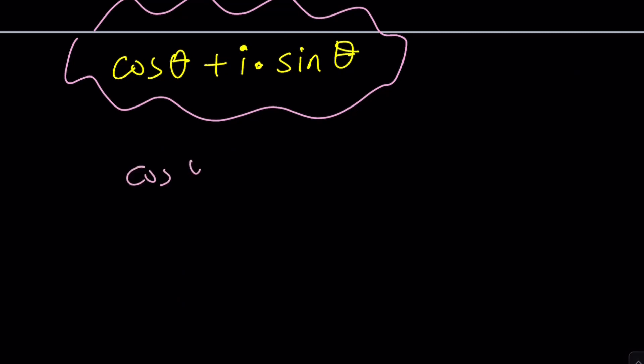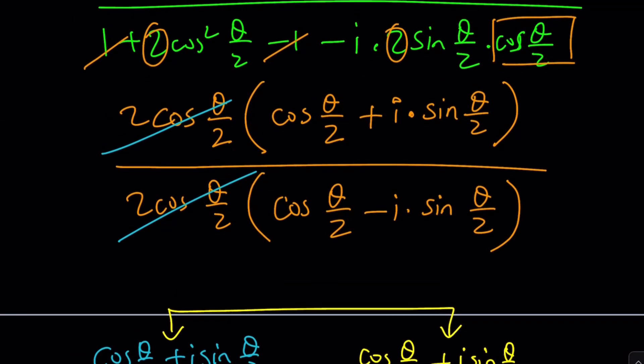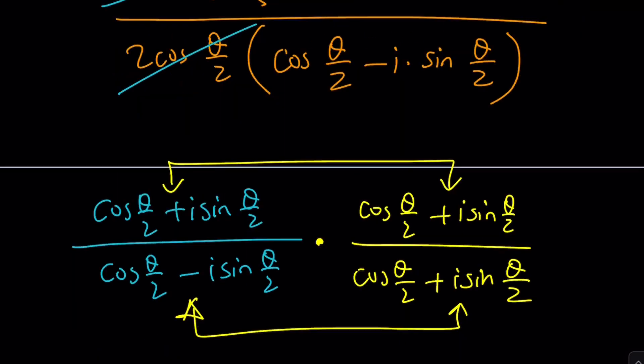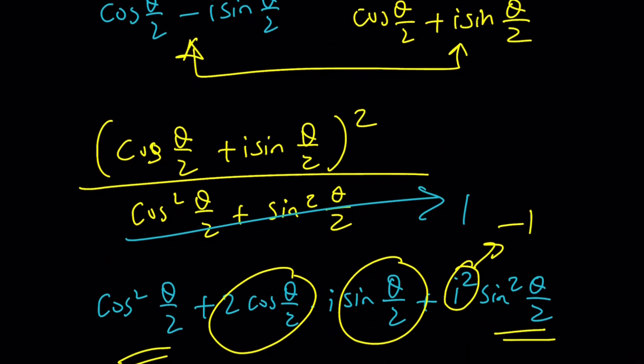So we were simplifying cosine theta over 2 plus i sine theta over 2, and that is divided by cosine theta over 2 minus i sine theta over 2. And by the way, before we start simplifying this, I just want to say something. And you probably noticed, instead of squaring and multiplying by conjugates, I could also use the Moivre's theorem. I can never say the French version.